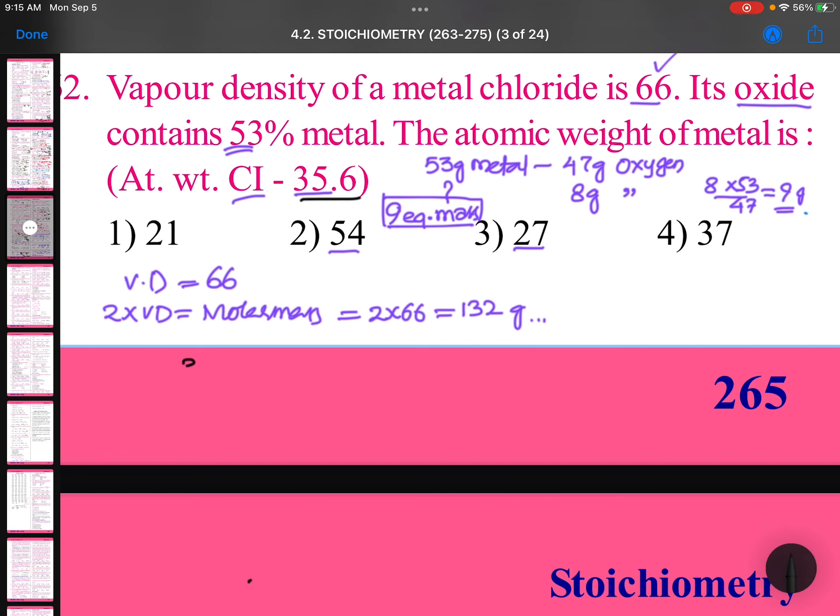And equivalent mass of metal is 9. So total 44.6—equivalent mass of metal plus equivalent mass of chlorine together is 44.6. If total molecular mass is 132, and equivalent mass of metal and chlorine equals 44.6, if you divide this you will get the valency factor.